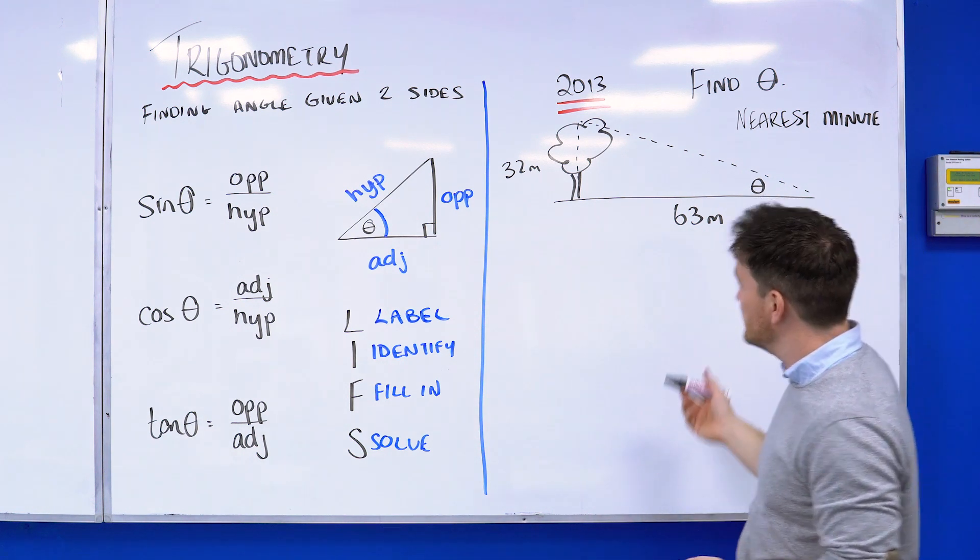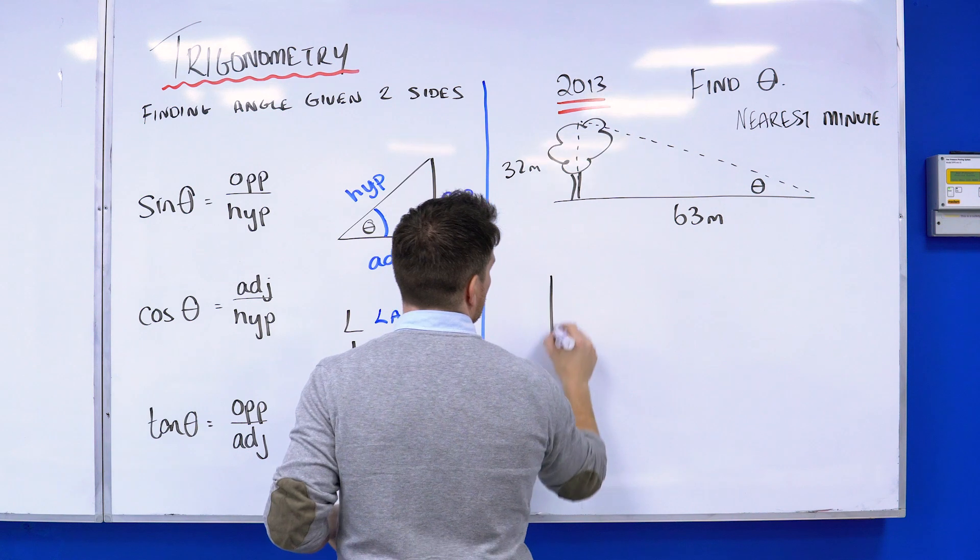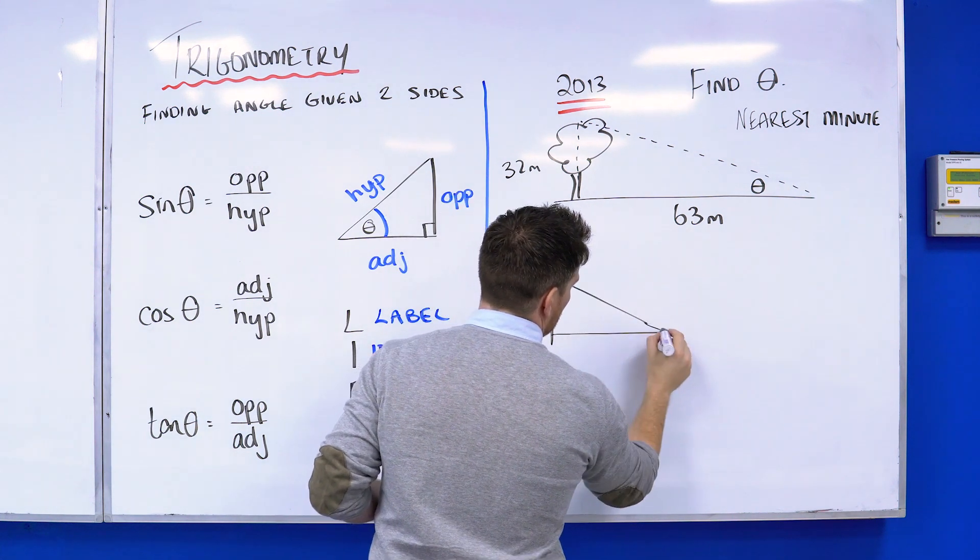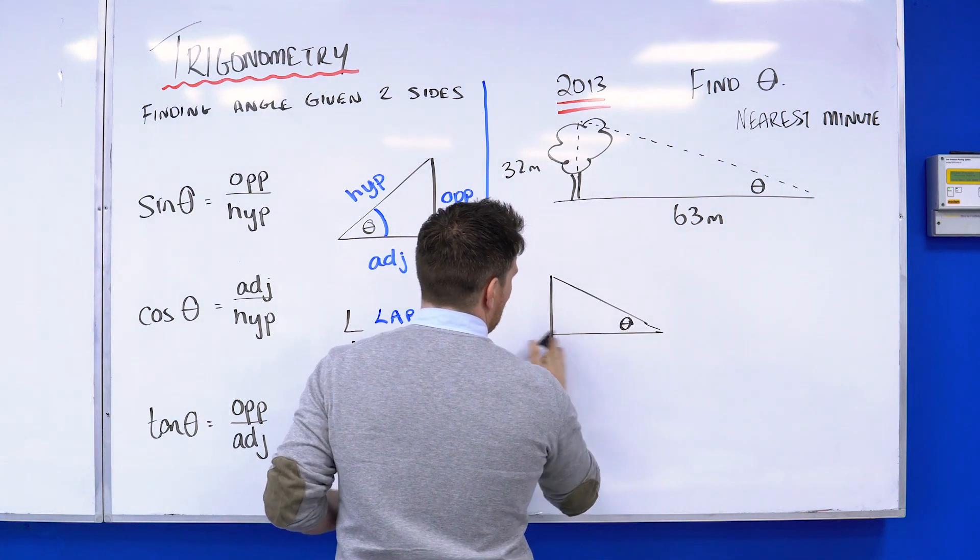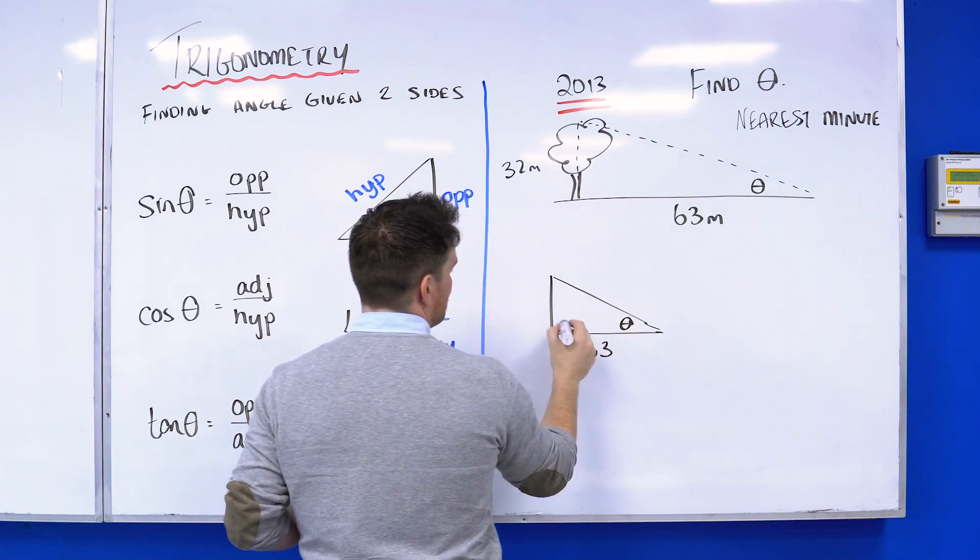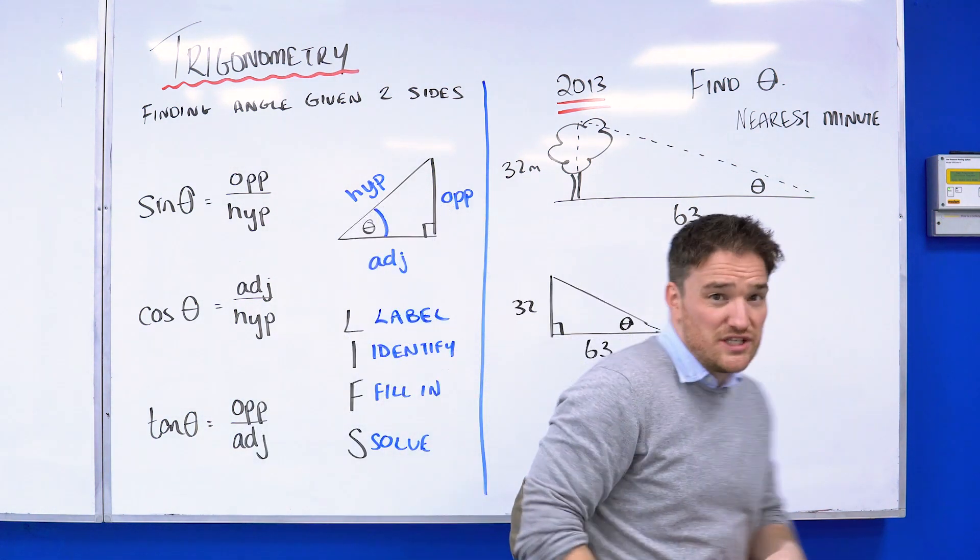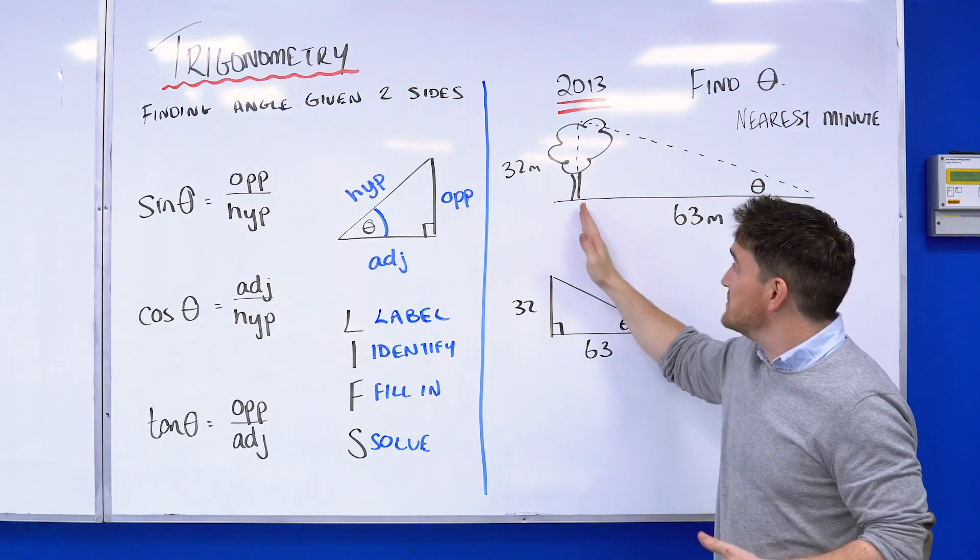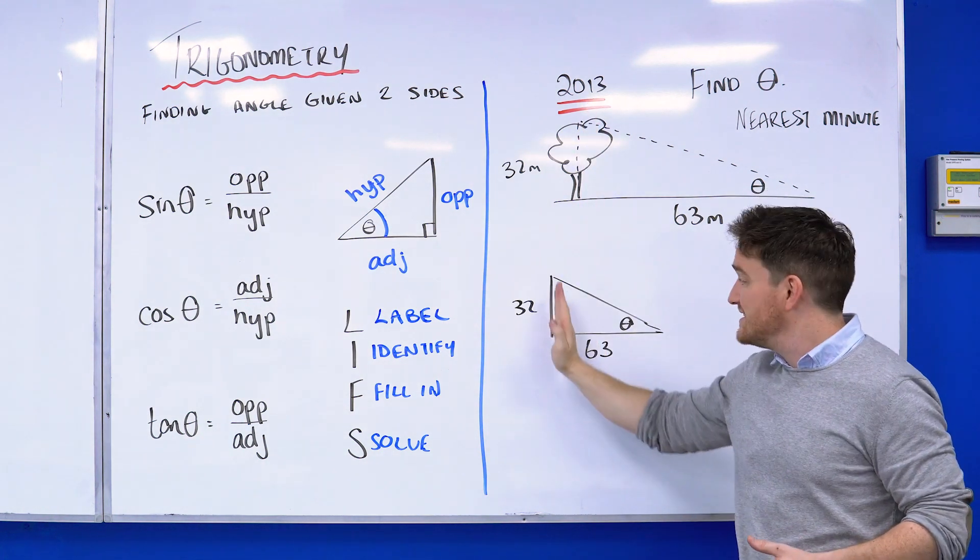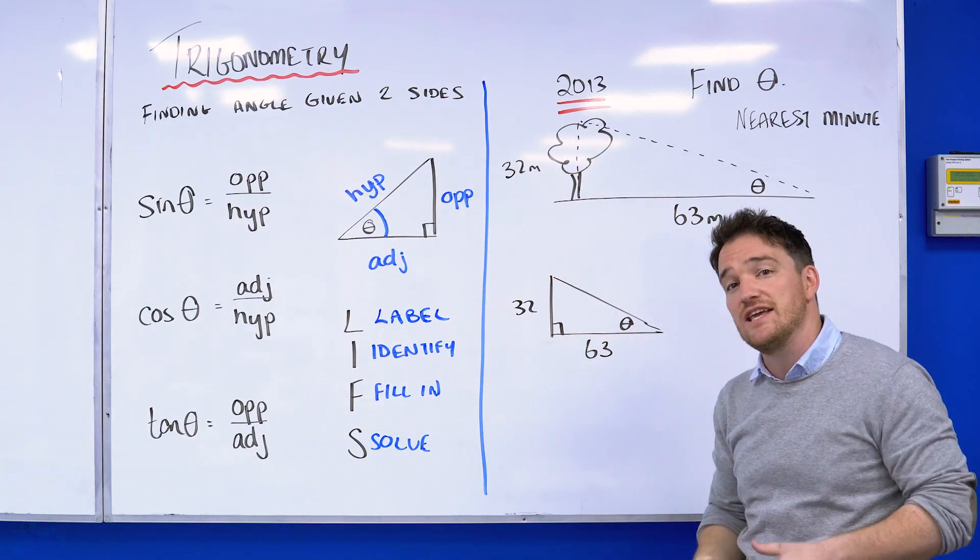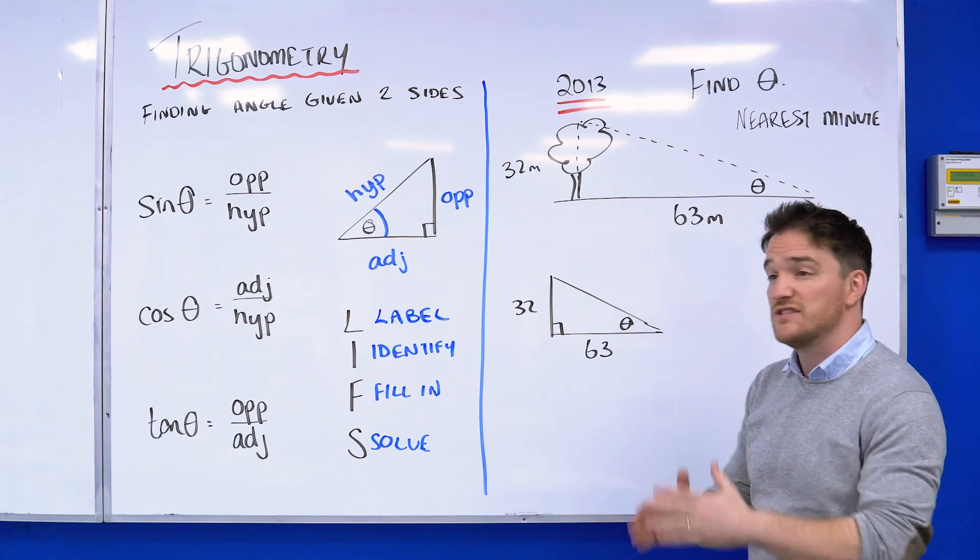What we're going to do is redraw a triangle for myself in my exam just to give some thinking space. That would be 63 and this is 32. You're going to make an assumption—you're assuming this tree is straight up at 90 degrees. They might not tell you that; you can just assume it, like if it's talking about a building.